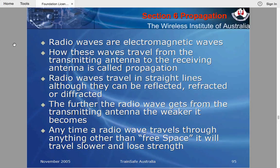Radio waves travel in a straight line, although they can be refracted, reflected, or diffracted. The further a radio wave gets from the transmitting antenna, the weaker it becomes — that may be a question in the foundation theory exam. Just think of a light bulb: when you're close to it, the light is strong, but the further you walk away, the weaker it gets.